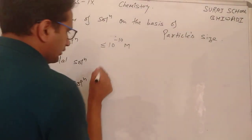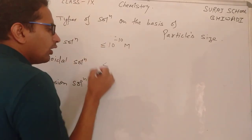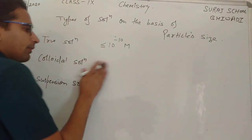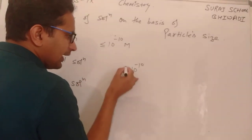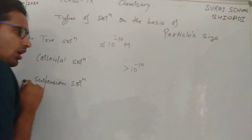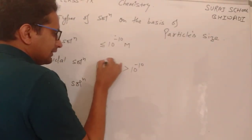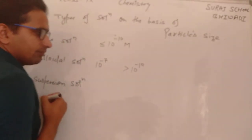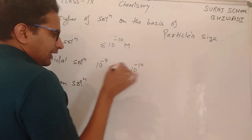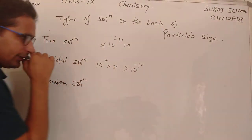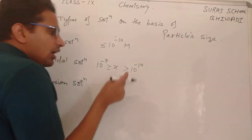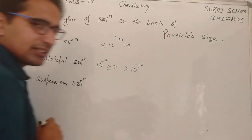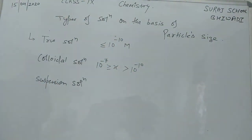Colloidal solution में particle का size 10⁻¹⁰ meter से बड़ा होता है और 10⁻⁷ meter तक होता है — सब कुछ meter में चल रहा है। तो colloidal solution वो होता है जिसका size 10⁻⁷ meter से छोटा लेकिन 10⁻¹⁰ meter से बड़ा होता है। यानी 10⁻⁷ से लेकर 10⁻¹⁰ meter के बीच जो होते हैं, उन्हें हम colloidal solution कहते हैं।